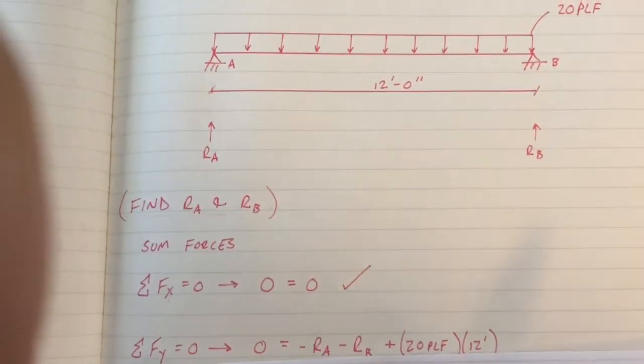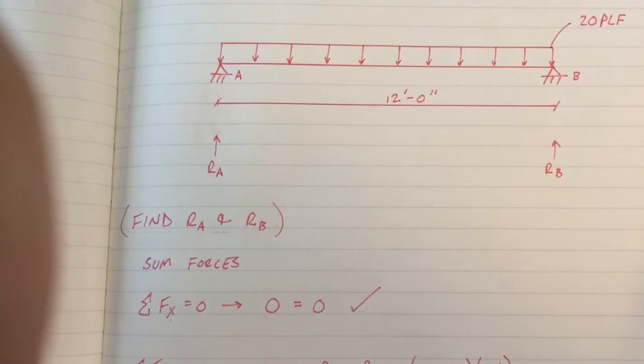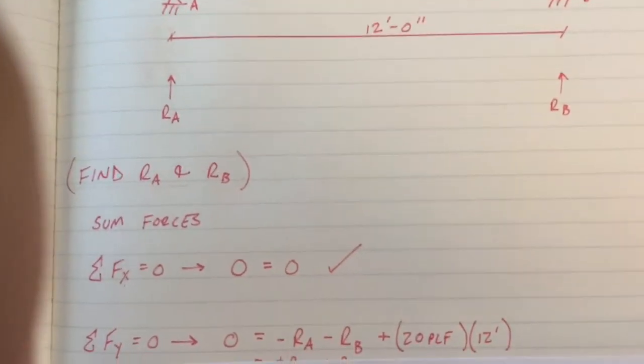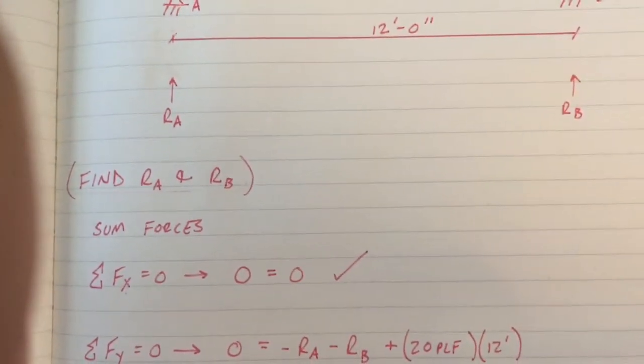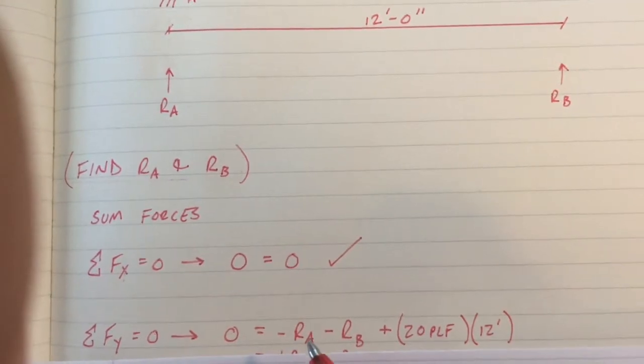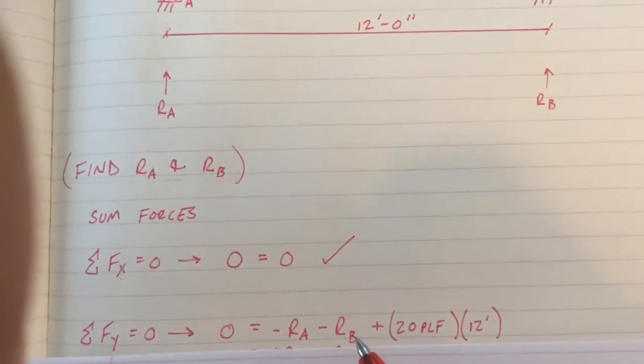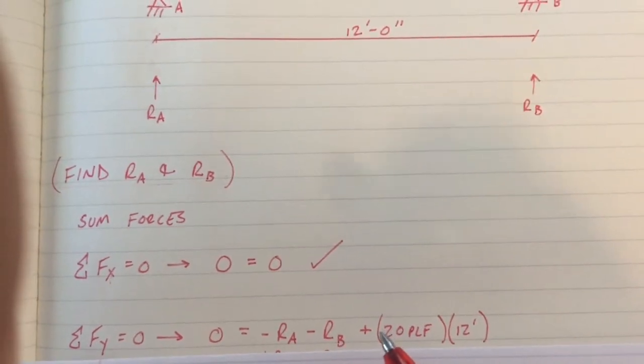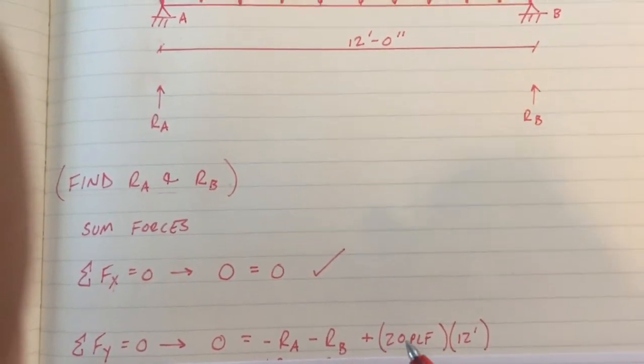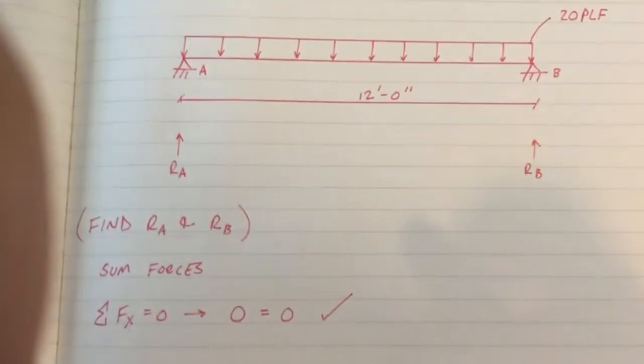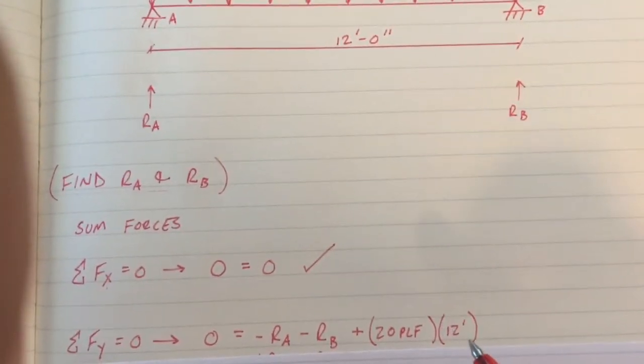I start off with zero on the left hand side. I have a negative RA value, that's my reaction A, minus my reaction B, and then plus 20 pounds per linear foot across the length of the beam, 12 feet.